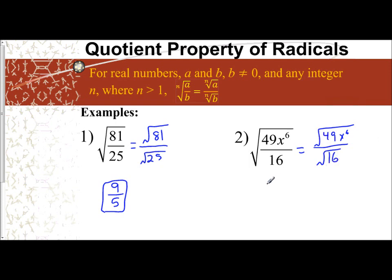The square root of 49 is 7, and the square root of x to the sixth - six divided by two is three - so you have x cubed over the square root of 16 which is 4. So my answer is 7x cubed over 4.